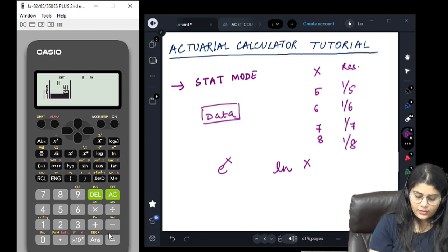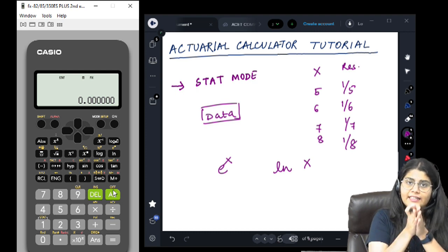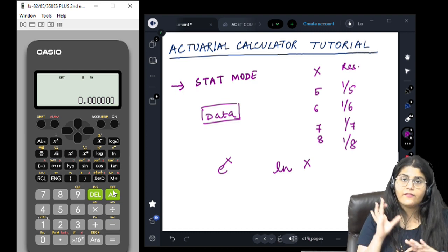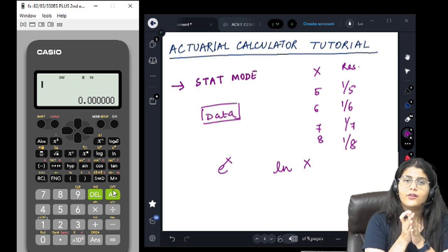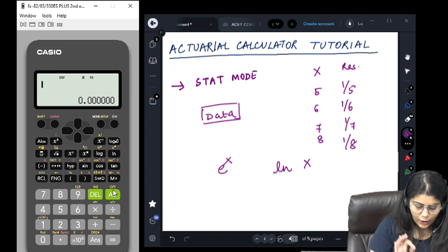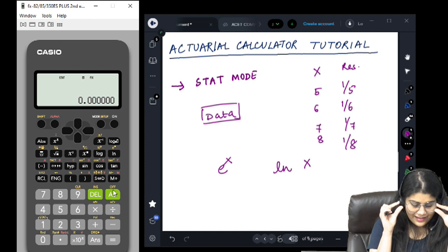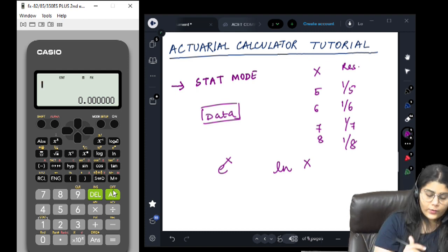Once you have entered your data, you press AC. As long as you are not exiting the stat mode, this data will be stored as your statistical data. Now you have entered all your values. How to use them in statistics? You can see on top of the digit 1, there is in bold letters written stat in yellow color. So we press shift stat.